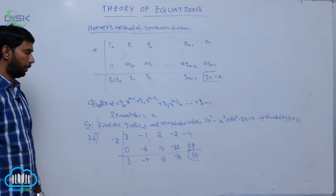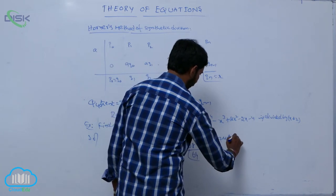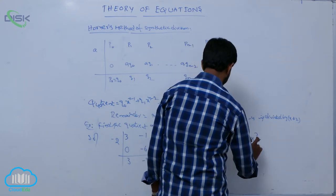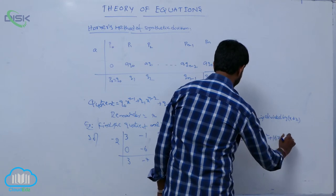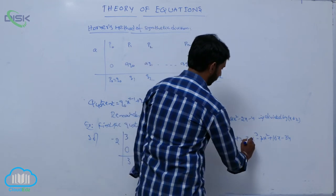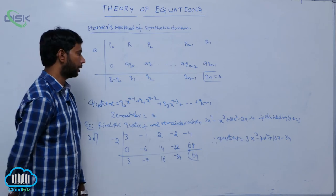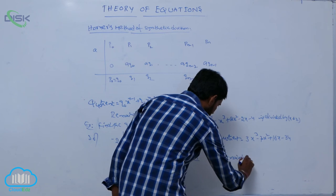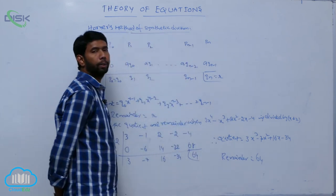Here the remainder is 64. The quotient is equal to 3x^3 - 7x^2 + 16x - 34. 3x^3 - 7x^2 + 16x - 34 is the quotient and the remainder is equal to 64.